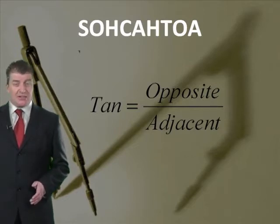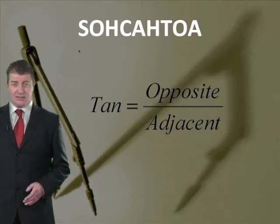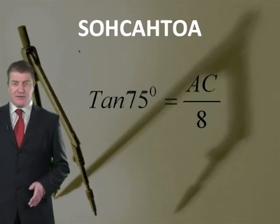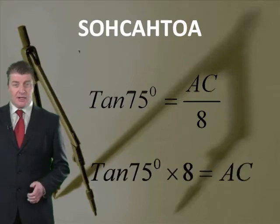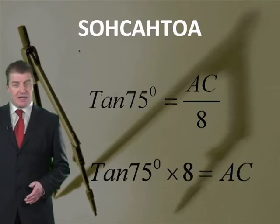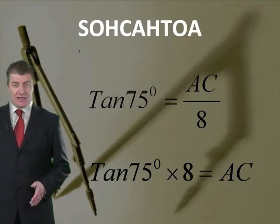The tangent equals the opposite divided by the adjacent. Therefore, the tan of 75 degrees equals AC divided by 8. You can rearrange this to say the tan of 75 degrees times 8 equals AC.